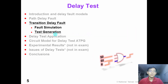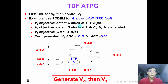Now let's move on to test generation for transition delay fault. Transition delay fault ATPG is actually very similar to single stuck-at fault ATPG. We first generate a single stuck-at fault pattern for V2, and then we control the value in V1. Then we are done.